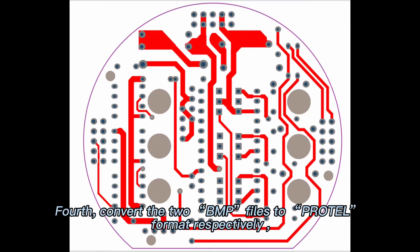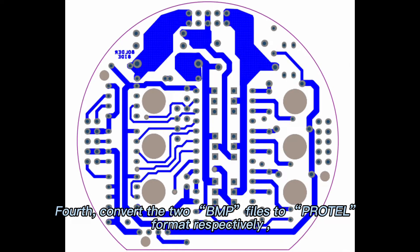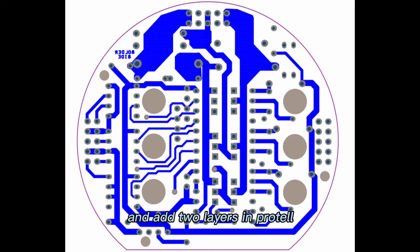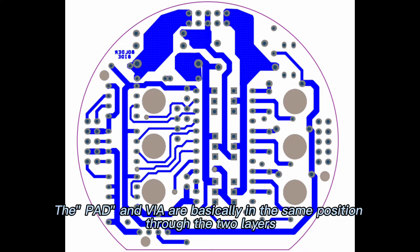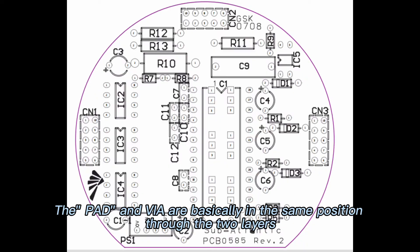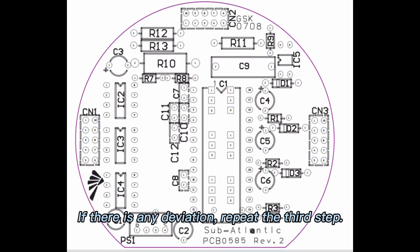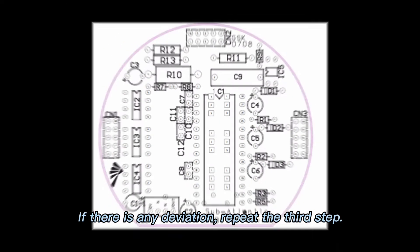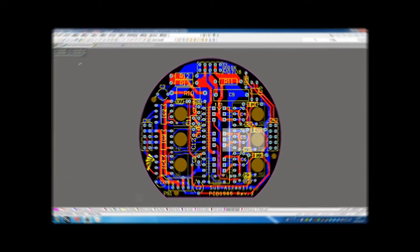Fourth, convert the two BMP files to Protel format respectively, and add two layers in Protel. The pads and wires should be basically in the same position through the two layers. If there is any deviation, repeat the third step.